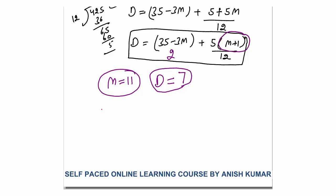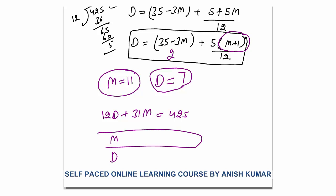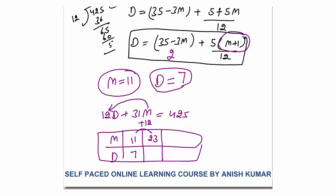My equation was 12D plus 31M equals 425. I got one solution: M equals 11, D equals 7. If you check, this will satisfy. Now can I have one more solution? M value will change by 12. But if M changes by plus 12, it becomes 23 — not valid since months only go from 1 to 12. And if M changes by minus 12, it becomes negative. So there is only one possibility: M is 11 and D is 7. The month of birth is November.